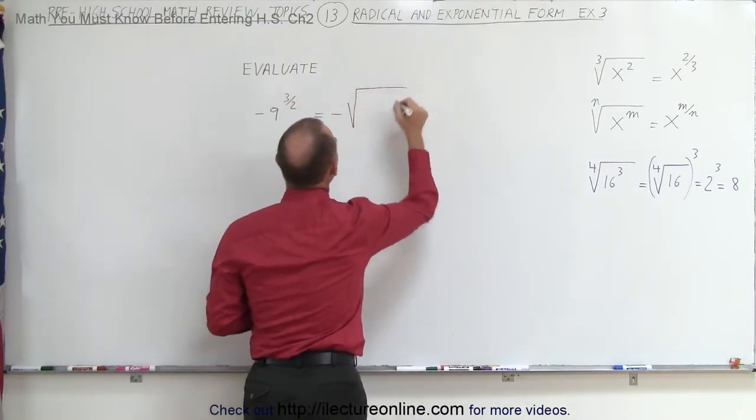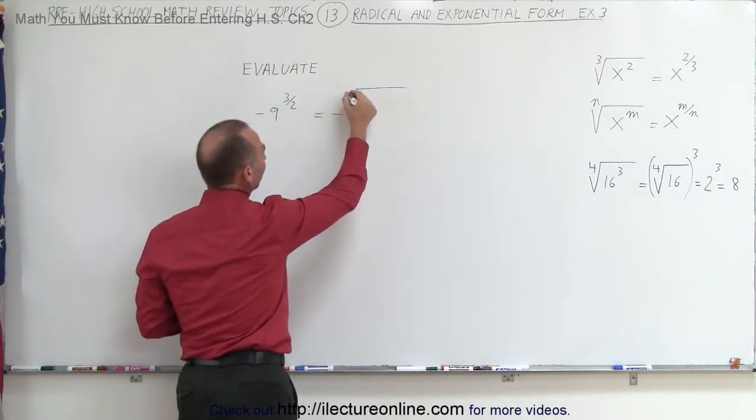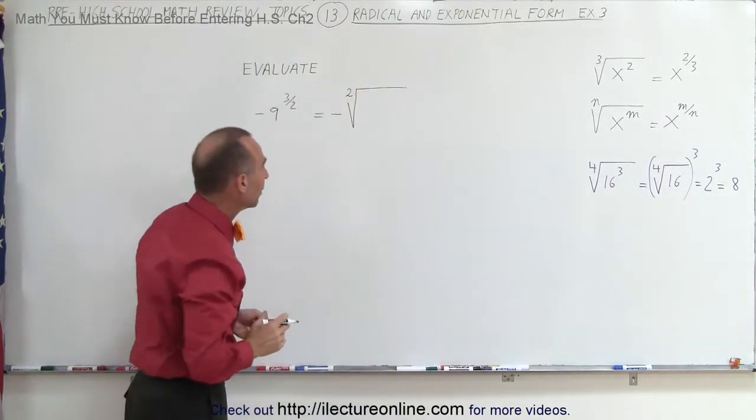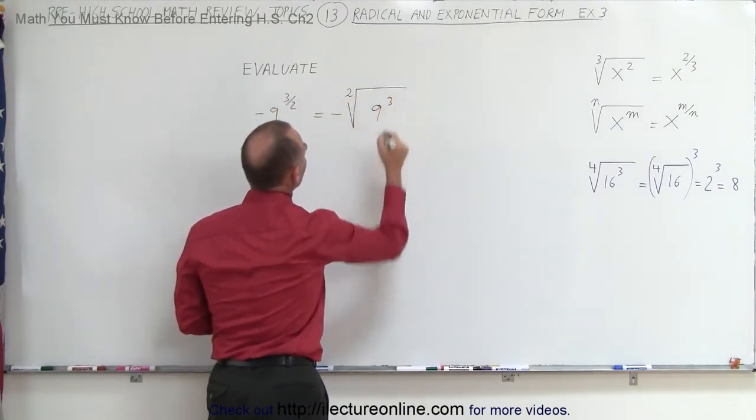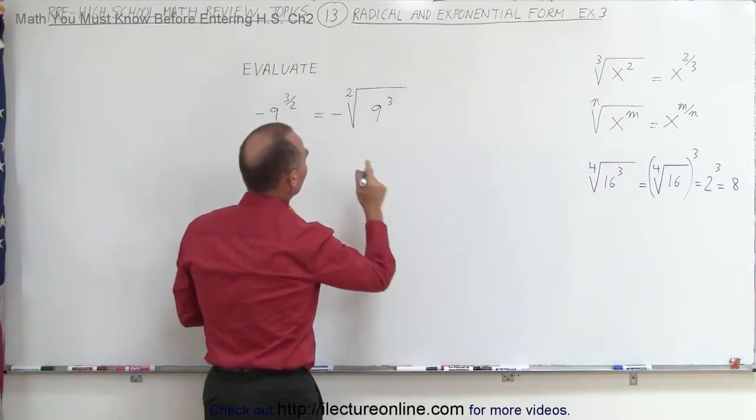Negative, and in this case, the number on the denominator indicates the root, so it's the square root. We don't have to write the 2, but just so that it becomes clear, I'll write the 2 there anyway. That's the square root of 9 cubed, and because we have that there, now we can use that as an example.